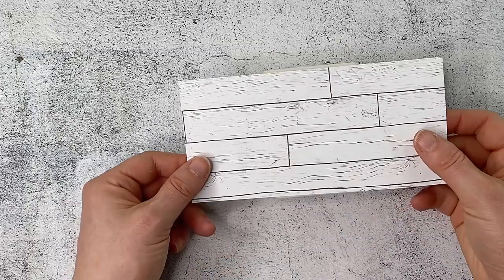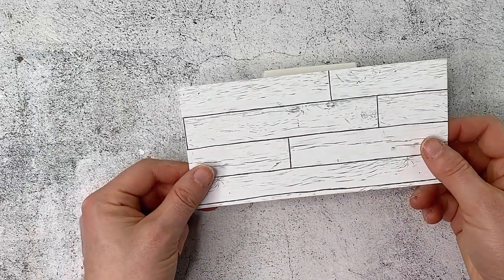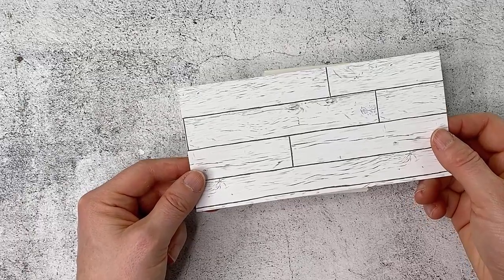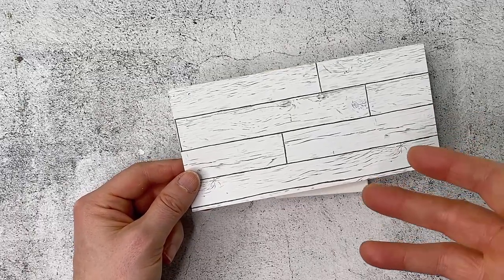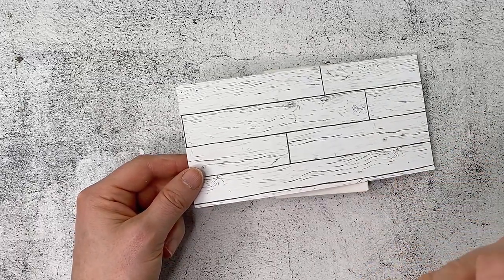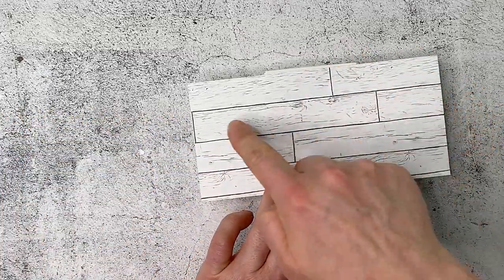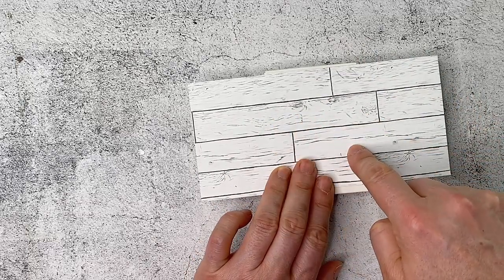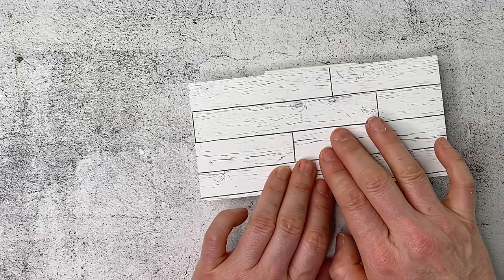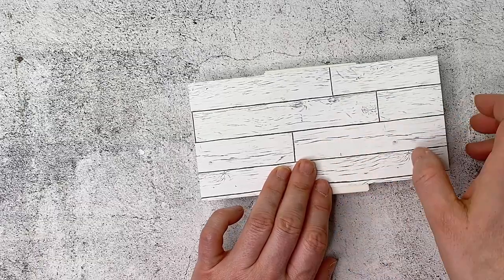So we're going to cover our box using the heart and home papers and this is a really great set because you get quite a few gray and white wood prints and they're very similar to each other which is just really nice and they're very neutral. You could even write on these for some journaling, you can stamp directly on them because they're quite light.